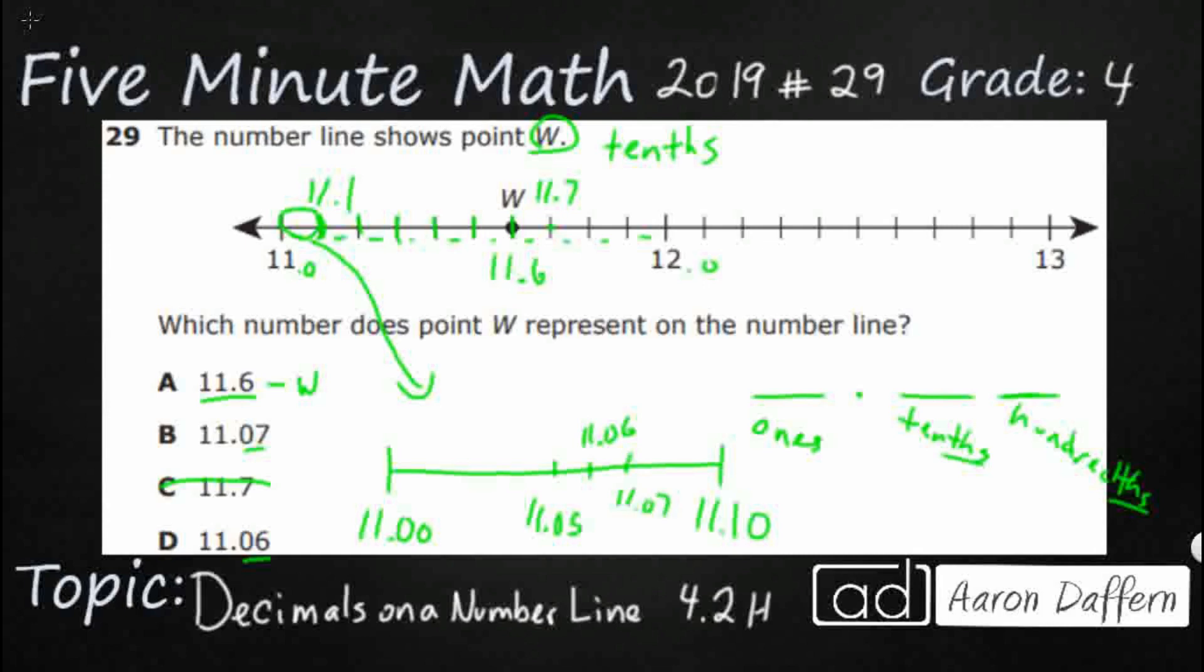So you see those two are right next to each other, but those are hundredths. And all of this happens right here in this little chunk that we've already circled up here between eleven point zero and eleven point one. So since those two numbers went to the hundredths place, they become really, really small. They're nowhere near our point W. So our answer here is going to be A.